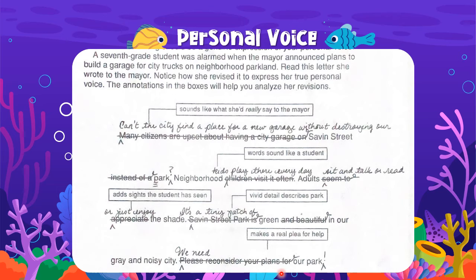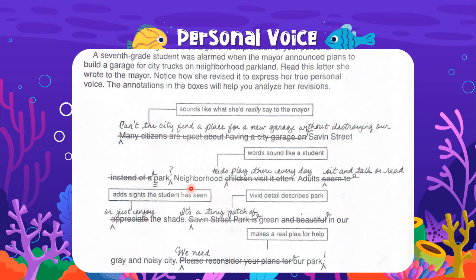And the last sentence: 'Please reconsider your plans for our park.' That's kind of like, eh, if you want to. So the student changes it to make a real plea — 'we need our park.' So instead of the formal version — 'many citizens are upset... neighborhood children visit it often... adults seem to appreciate the shade... Savin Street Park is green and beautiful... please reconsider your plans' — a more personal style is: 'can't the city find a place for a new garage without destroying our Savin Street Park? Neighborhood kids play there every day. Adults sit and talk or read or just enjoy the shade. It's a tiny patch of green in our gray and noisy city. We need our park.' That changes it to make it more the style of a student, and that's what we mean when you want to write in your personal voice.